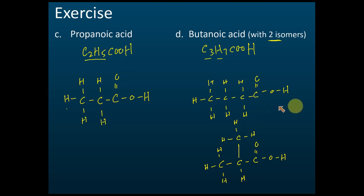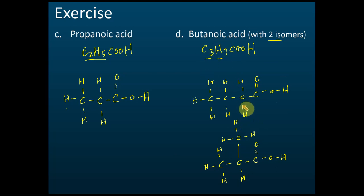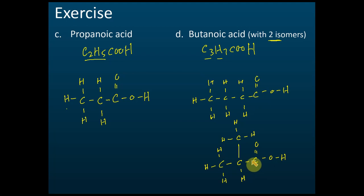These are the two isomers of butanoic acid. Every time we draw a structural formula, we start with the carboxyl group, then add the carbon chain. For butanoic acid: the first isomer has four carbons in the longest chain, and the second isomer has three carbons in the longest chain with one branch.